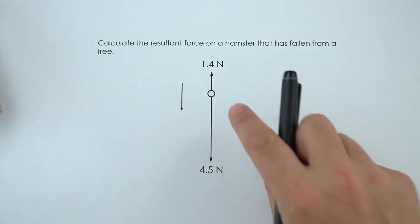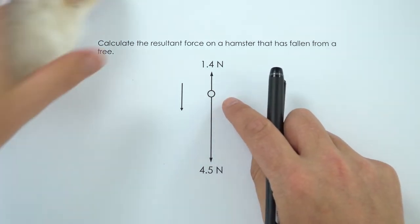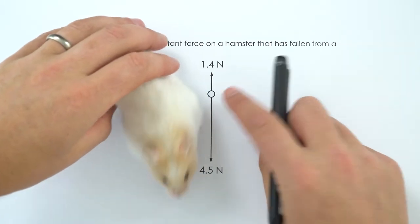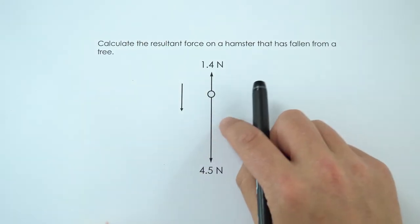So what we have over here is this circle representing the hamster. When they're falling they've got a mass.